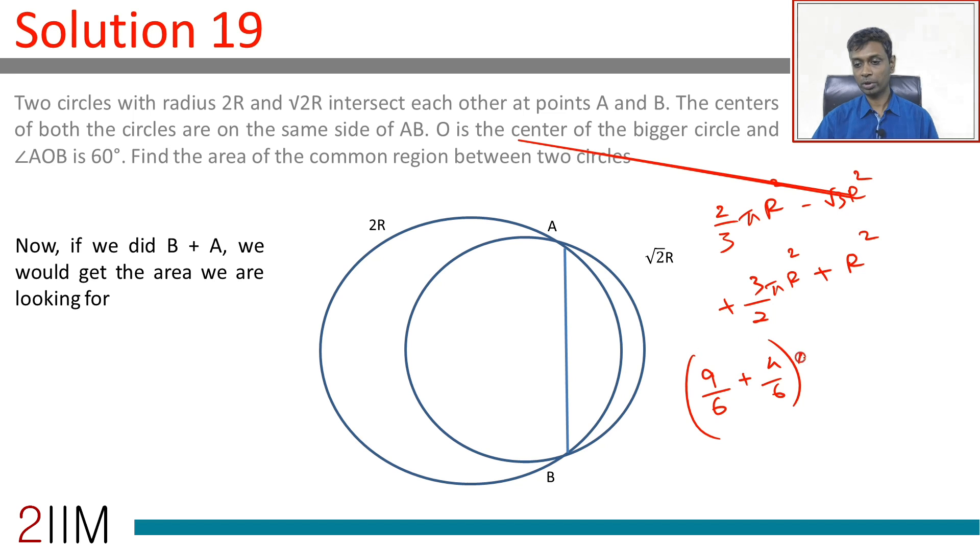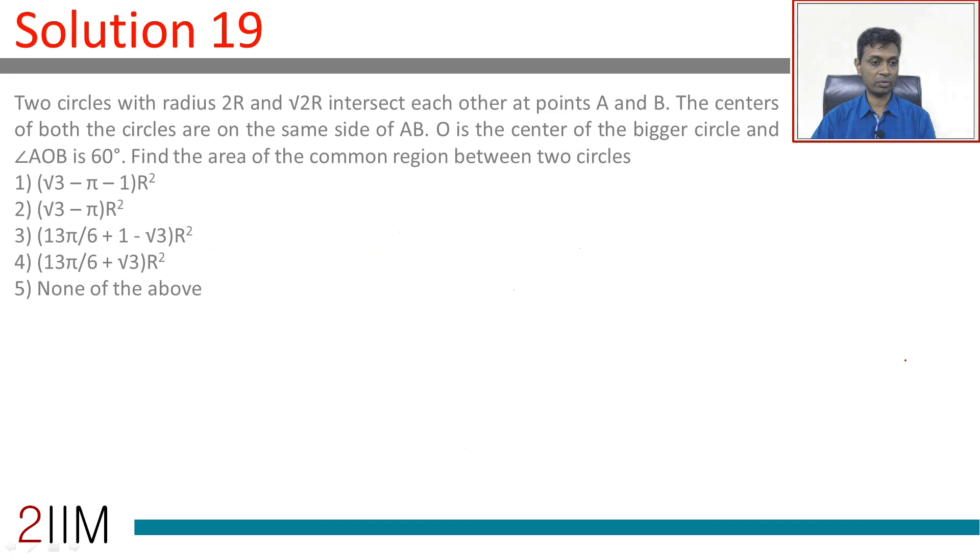9 by 6 plus 4 by 6 pi R square, minus root 3 R square, plus R square. Or the area would be 13 by 6 pi R square, minus root 3 R square, plus R square.